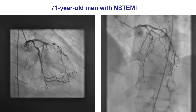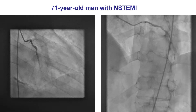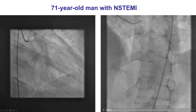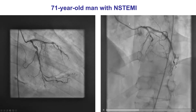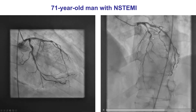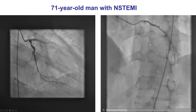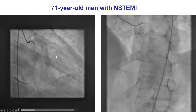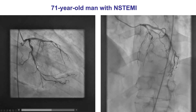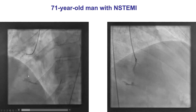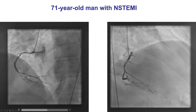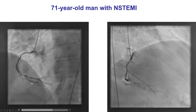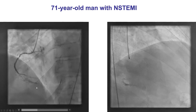The patient presented with non-ST elevation myocardial infarction. Coronary angiography showed significant disease in the LAD with a 90% heavily calcified and tortuous lesion. There were also lesions in the circumflex and a 90% lesion in the distal right coronary artery that was also heavily calcified.